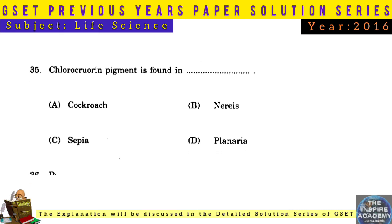Question No. 35: Chlorocruorin pigment is found in Nereis.